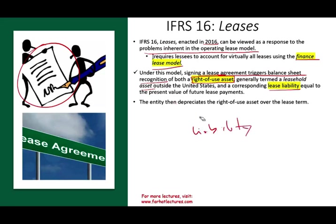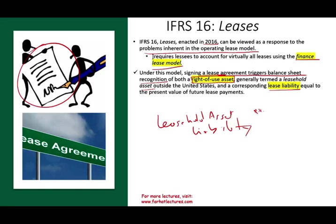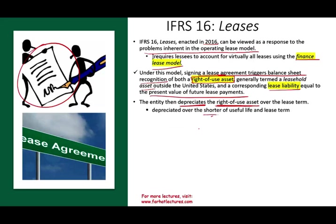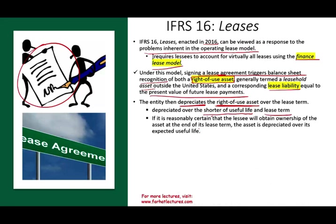In the US this asset is called the ROU (right-of-use) asset; outside the US, in international accounting, it is called the leasehold asset. You debit the asset and credit the liability, both equal to the present value of the lease payments, discounted just like any other liability. Once you have the asset, you depreciate it over the shorter of the useful life or the lease term — unless it is reasonably certain the lessee will obtain ownership at the end, in which case you depreciate over the expected life of the asset.